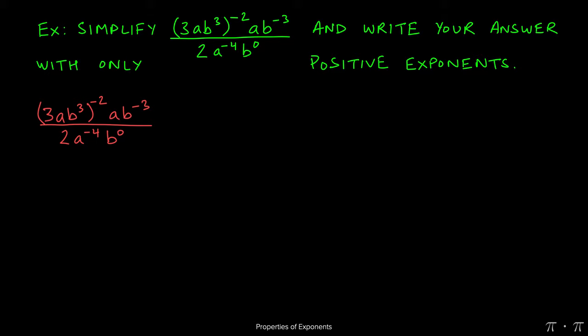So we start by expanding out this parentheses by applying the product to a power rule, because we have a product on the inside with a power on the outside. This applies the power of negative 2 to 3a and b cubed. Everything else in the problem can stay the same. We're just going to concentrate on this set of parentheses that's still left over.